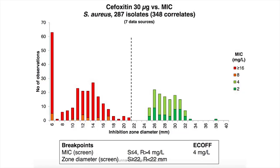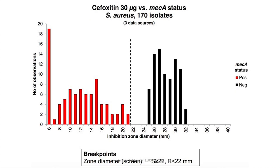Here's one example of something that works fine: the cefoxitin screening for MRSA in Staphylococcus aureus. You can see that the results are painted in the colour of MIC values. All the greens are to the right of the breakpoint and all the reds are to the left — there is no overlap in this test. It's a robust test which will give you the right answer 99.9% of the time, provided your material is fine. And if you want to check that, look at the mecA positivity and negativity — the breakpoint will divide the population according to mecA status in the same robust manner.